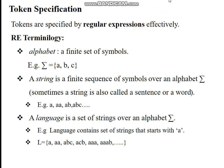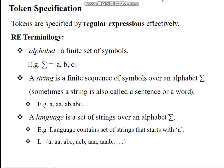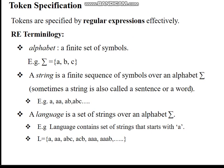Token specification is done effectively by regular expressions. Regular expressions use some key terminologies. The first is 'alphabet' — the alphabet is a set of symbols represented by the sigma symbol. For example, the set {a, b, c}. Using this set of symbols, we can form any number of strings, and the string length should be finite, formed over the given alphabet.